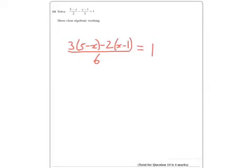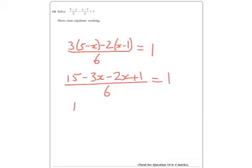Alright, I'm then going to expand the brackets, so I get 15 minus 3x minus 2x plus 1, all over 6, equals 1. I don't really want fractions in there, so multiply by 6, and I'm also going to simplify the top. So there we go, I end up with this.